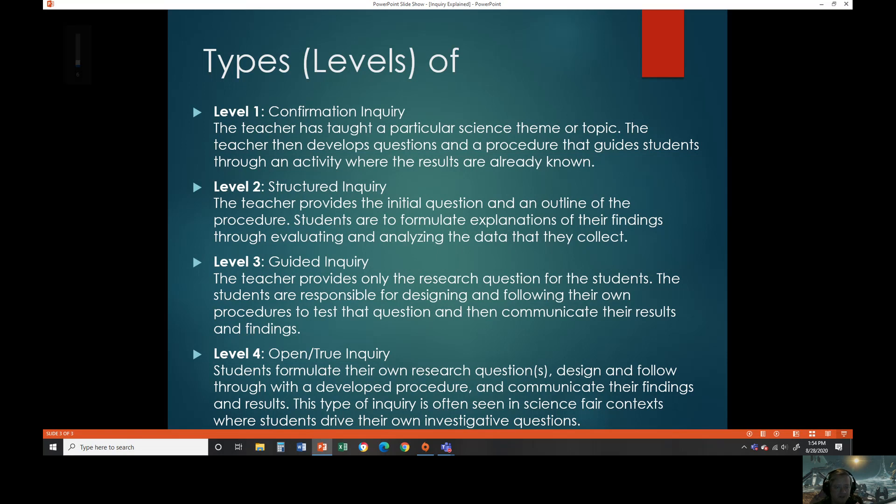So the last one, level four, is open and true inquiry. This is where students formulate their own research questions. The students come up with the question, the students come up with the experiment, they come up with the design, they come up with the procedure, they come up with their own findings, and they present their own results. Now a lot of times we call this the science fair inquiry because this is where a lot of science fair exhibits or experiments where students come up with their own question, they drive their own investigations, and they share the results of what they have.